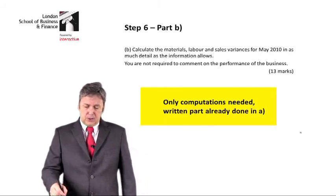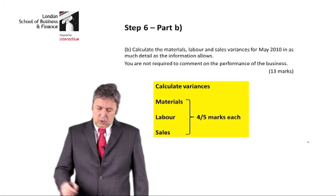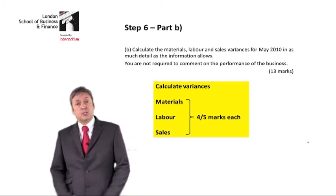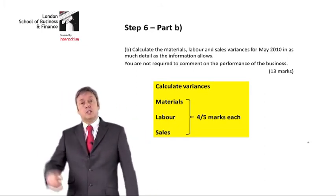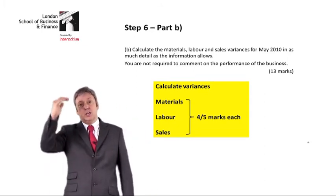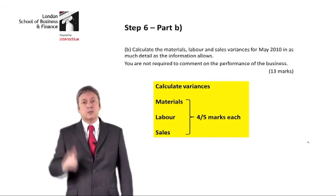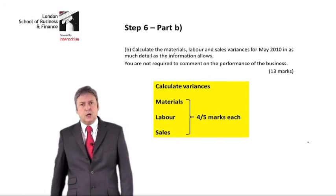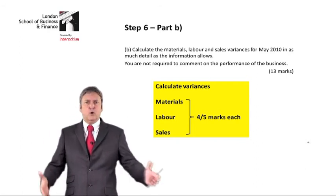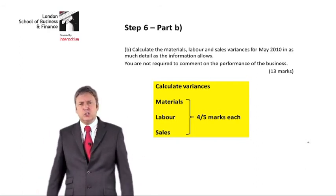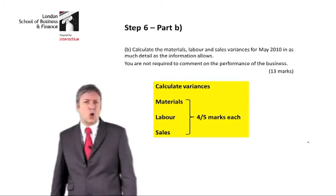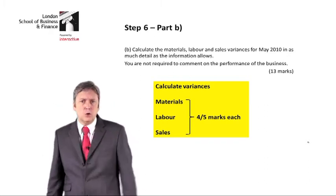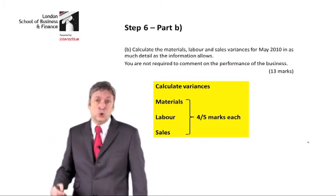Only computations needed. Looking at the information in front of you, we've got to look at materials, sales, and labour — four to five marks each. To me, this question is going to be a gift if you know your variances, which you better.